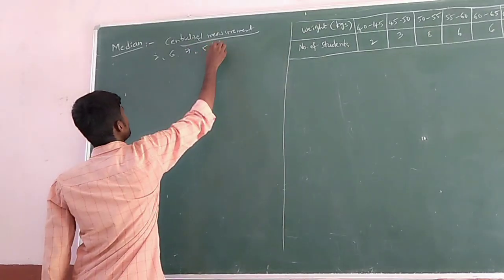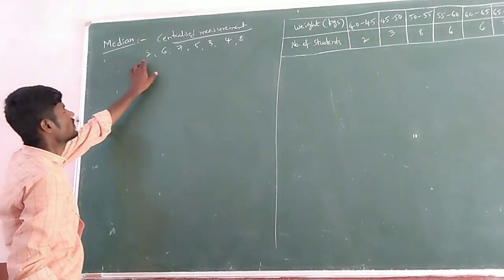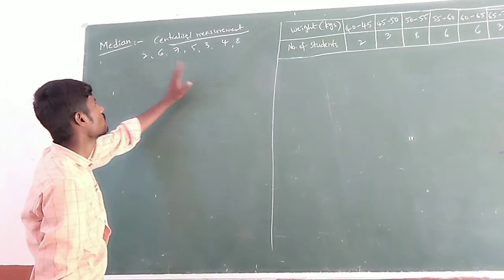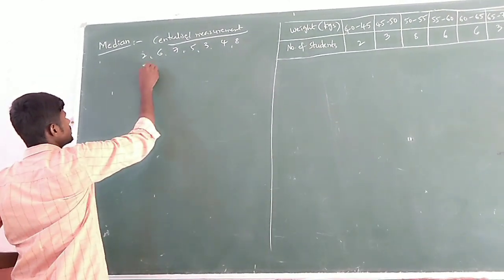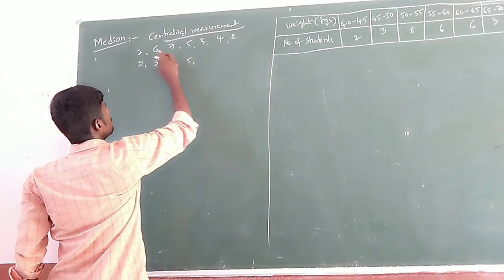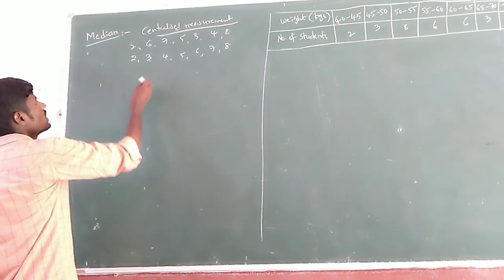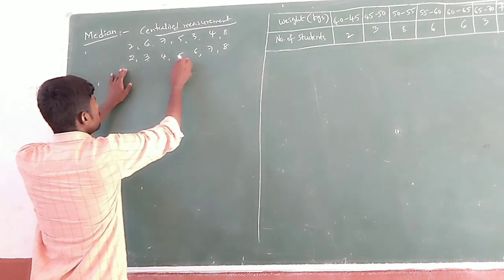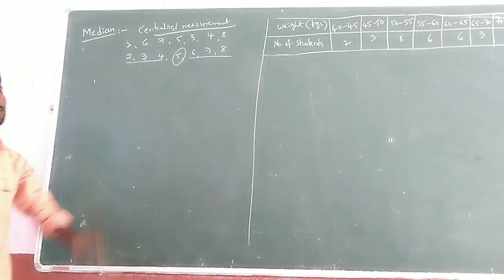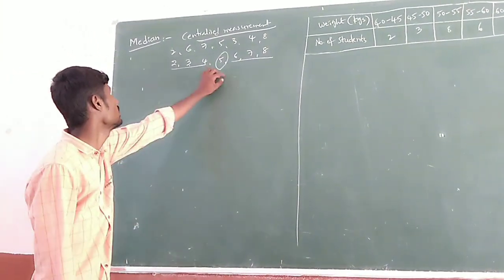Suppose you have this data. Are they in a particular order, either ascending or descending? No. If you arrange them in ascending order: 2, 3, 4, 5, 6, 7, and 8. After arrangement, the middle most value — counting 1, 2, 3, 4, 5, 6, 7 — out of 7 values, the middle most value is said to be the median. If you arrange in descending order, you will also get the same median.